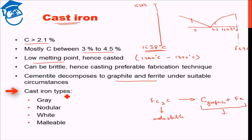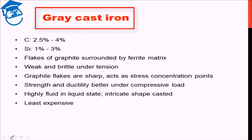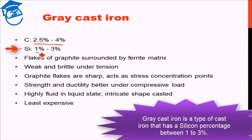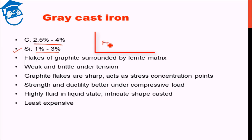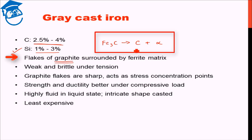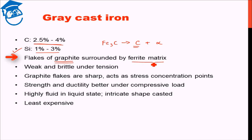Cast iron can be categorized into four categories: gray cast iron, white cast iron, nodular cast iron, and malleable cast iron. Gray cast iron has a carbon percentage normally between 2.5 to 4%, similar to the generic definition of cast iron. But in addition to carbon, silicon exists in quite a high percentage — that is 1% to 3% silicon exists in gray cast iron. This provides the favorable condition for cementite to decompose to graphite and alpha ferrite, resulting in flakes of graphite surrounded by a ferrite matrix.